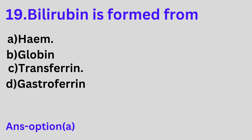Question 19: Bilirubin is formed from A. Heme, B. Globin, C. Transferrin, D. Gastroferrin. Option A is the correct answer. Bilirubin is formed from heme.